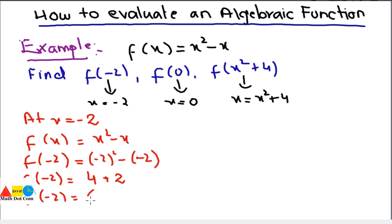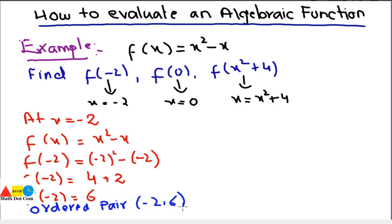So f(-2) = 6. This means that at x = -2, the value of y is 6. Writing it as an ordered pair — where the first element is the x value and the second is the y value — we get (-2, 6). This is one ordered pair of the given function.